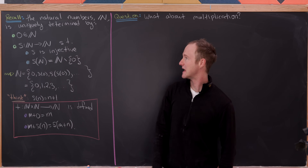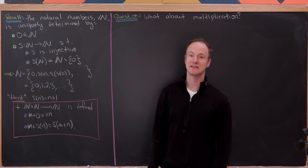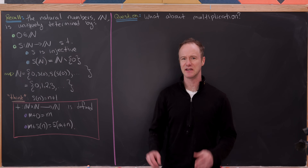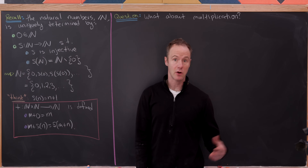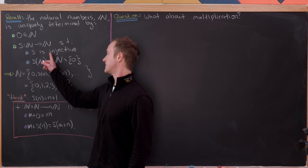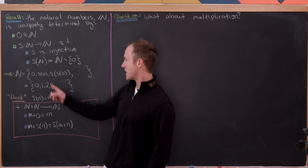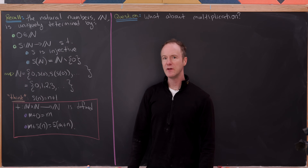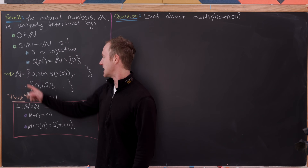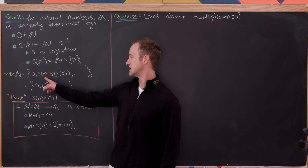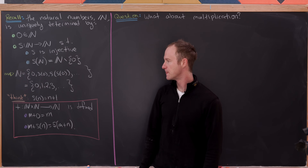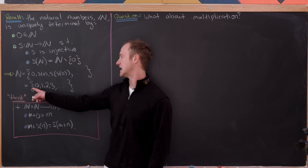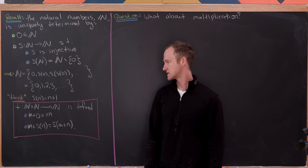The natural numbers, which we'll denote by N, is uniquely determined by the following setup. What I really mean by uniquely determined is that if something else has this setup then it's essentially the same as the natural numbers. Zero is an element of N, and we've got an injective function s from N to N so that the image of s is equal to all of N except for zero. From that, with a little bit of work, you can show that N is simply equal to zero, s of zero, s of s of zero, and so on. We can rename these things — s of zero becomes one, s of s of zero becomes two — so that N equals {0, 1, 2, 3, 4, 5, 6, 7, 8, 9, ...}.